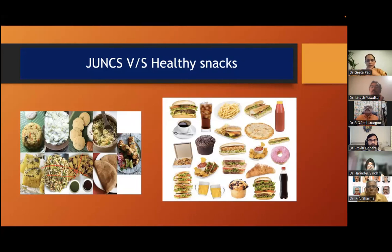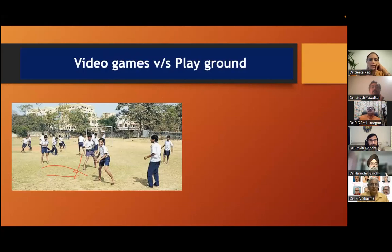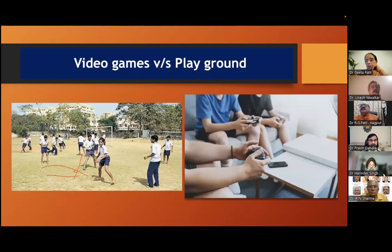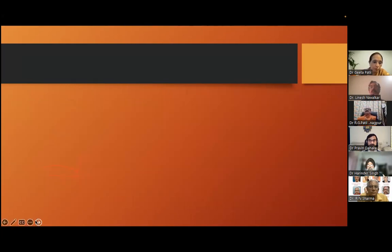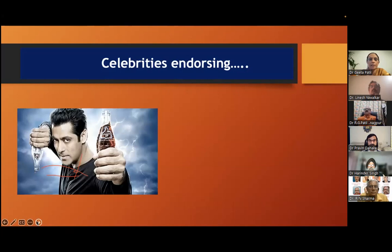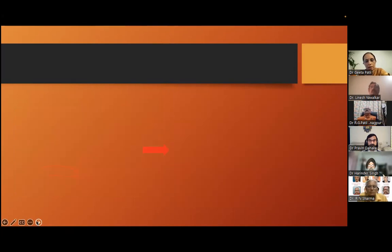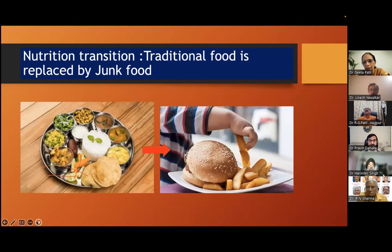Junk versus healthy snacks, social media, TV, video games and playground — when we ask our adolescents in OPD how many hours they play, they say two hours, but weight is not decreasing. That's a video game they're playing. Specifically ask them: is it a video game or playground games? And then celebrities endorsing unhealthy products, and these adolescents not having media literacy get carried away. Nutrition transition is happening — traditional food is being replaced by junk food.